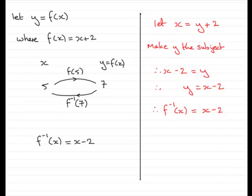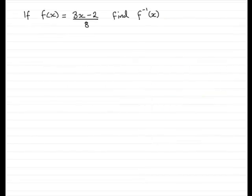So I'll run through an example to demonstrate this again for you. So here we have if f(x) equals 3x minus 2 all divided by 8, find the inverse function f to the minus 1 of x. So what we need to do is to say let x equal and wherever we see any x's in here we replace them with y's. So that becomes 3y minus 2 all divided by 8.